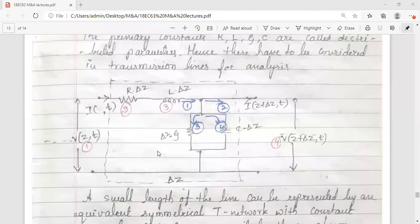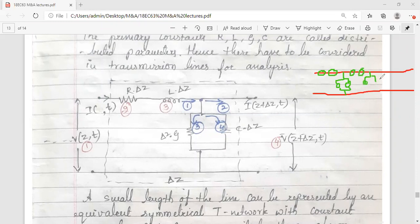Try to understand this figure. Your complete analysis equations, everything depends on this circuit. Check the circuit - it's a transmission line here. There is one resistance, one inductance, then one conductance, then capacitance. Again resistance, inductance, then G and C. This is repeated throughout the transmission line.